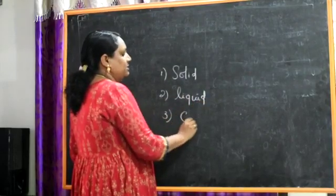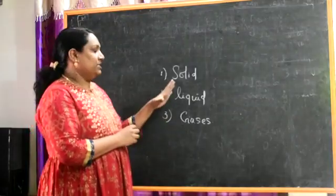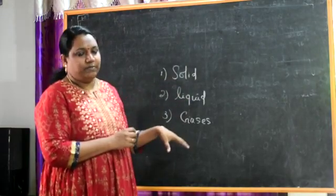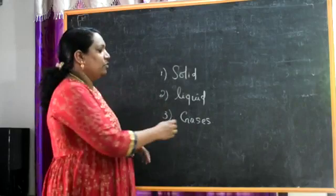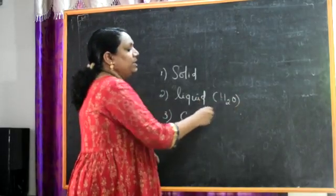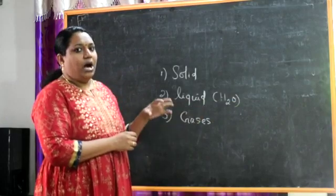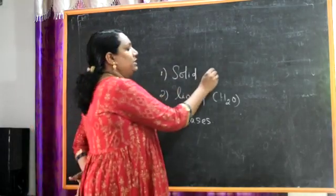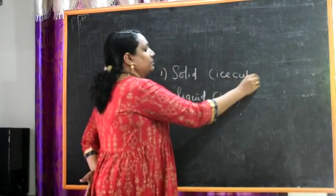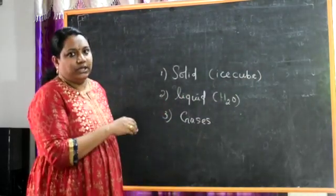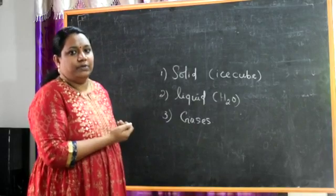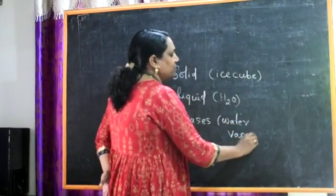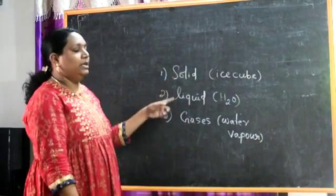In nature, a substance can exist in different states. For example, water is one molecule that illustrates 3 states. Water in a glass tumbler is the liquid state. When the temperature comes down, water becomes ice — the solid state. Water vapor is the gaseous state. So water can exist in three different stages: solid, liquid, and gas.